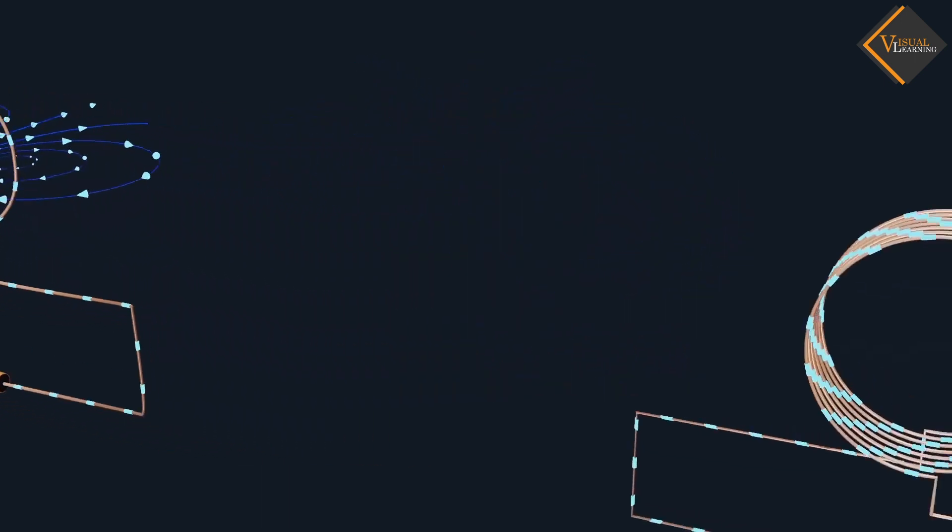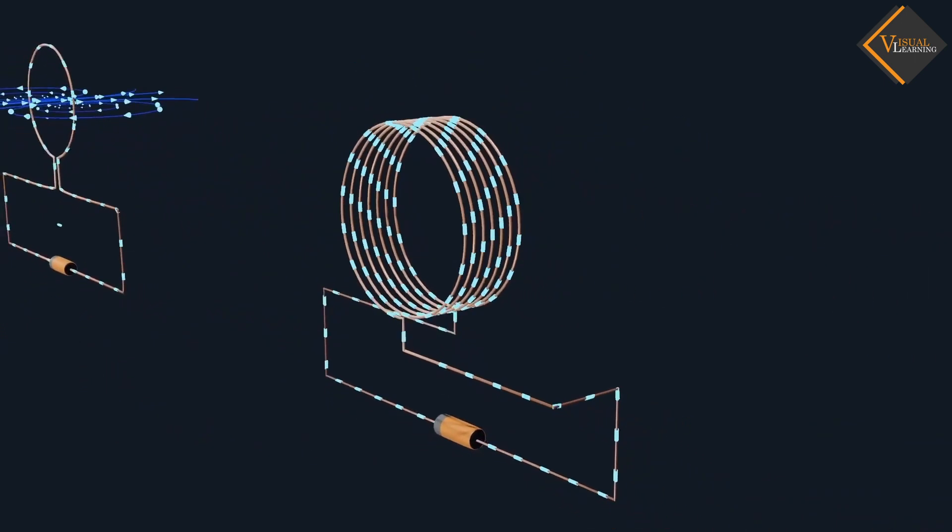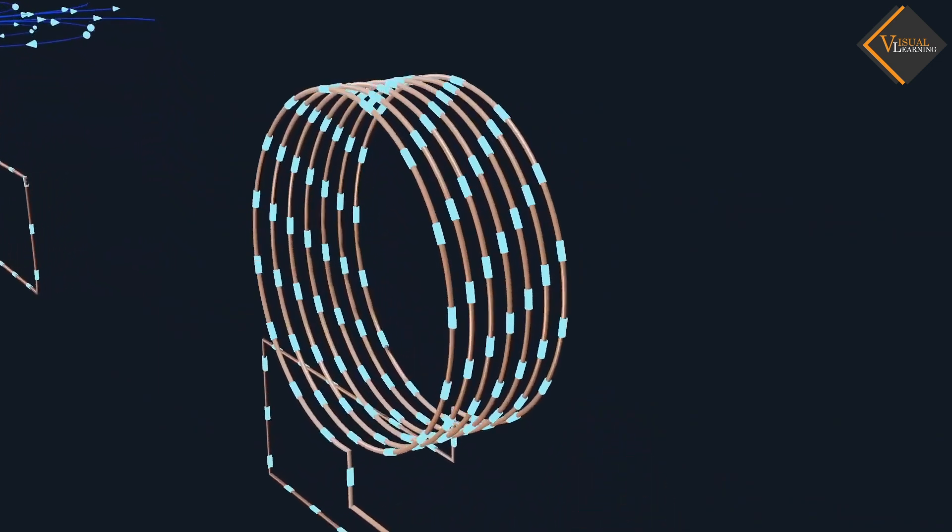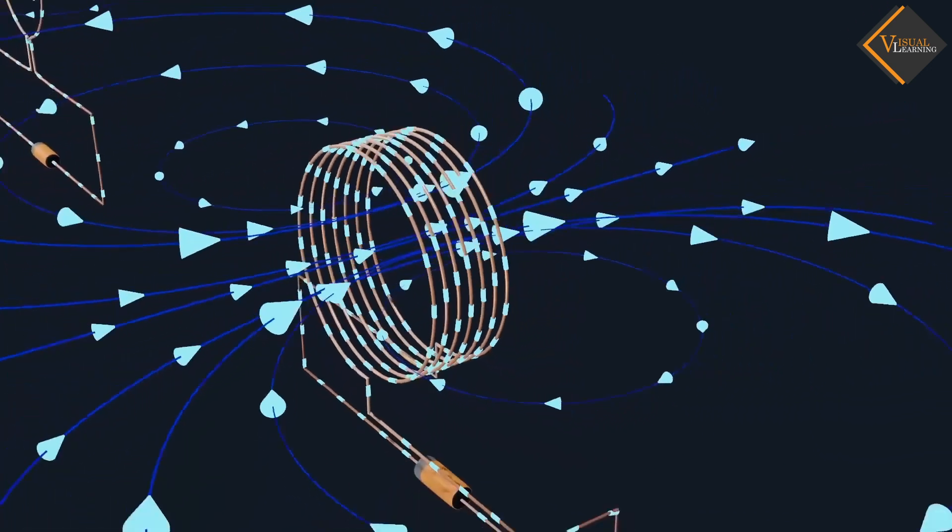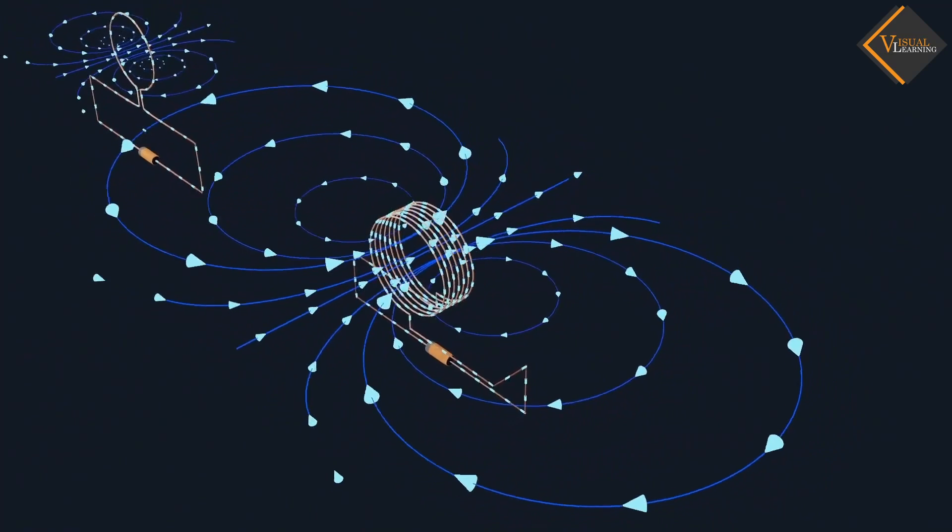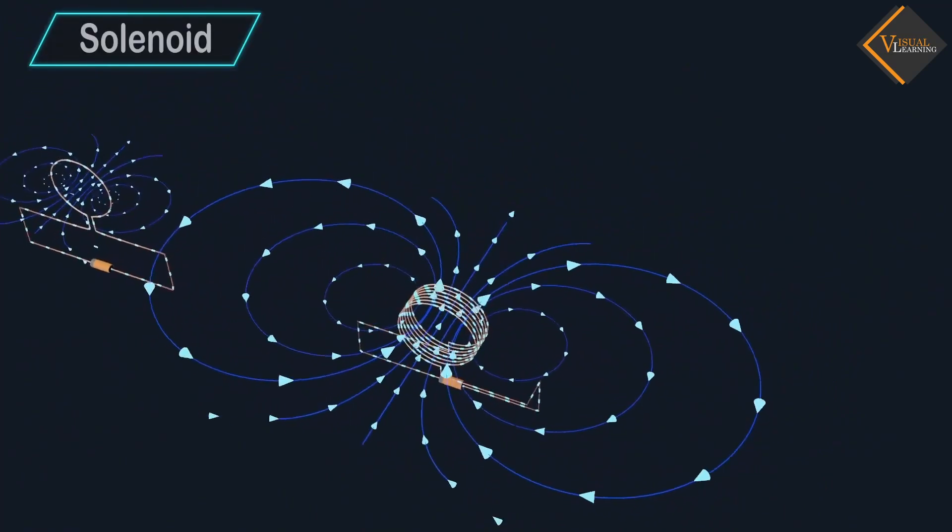But if we add many turns to this circular coil, its magnetic strength increases. And this circular coil with many turns is known as a solenoid.